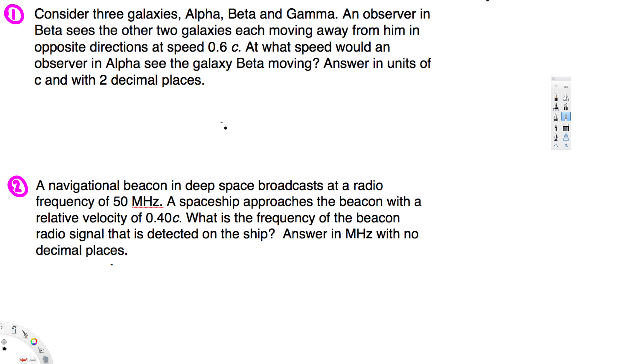Now let's draw a diagram for this one. So here we have Beta, let's say Beta is here. The Beta galaxy is here and the observer from Beta is watching. Alpha is moving away from him with velocity of 0.6c.